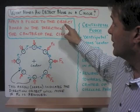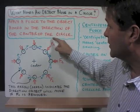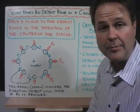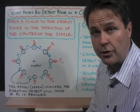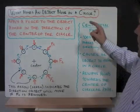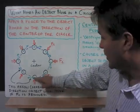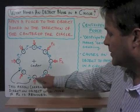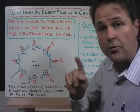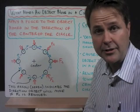So apply a force to the object aimed in the direction of the center of the circle and the object will move in a circular path. The green arrow represents the direction that the ball will move if you stop applying that force.